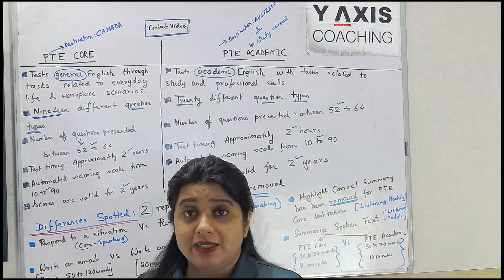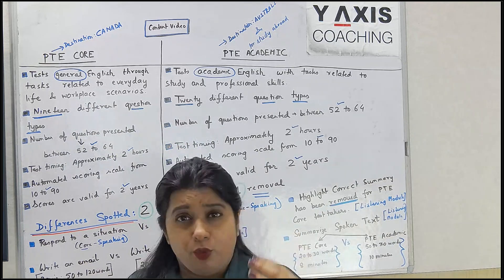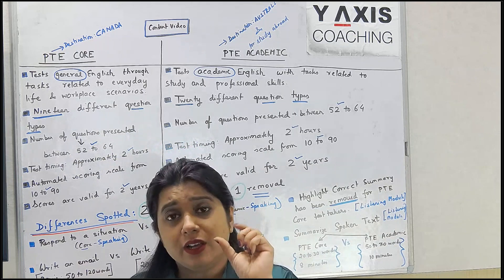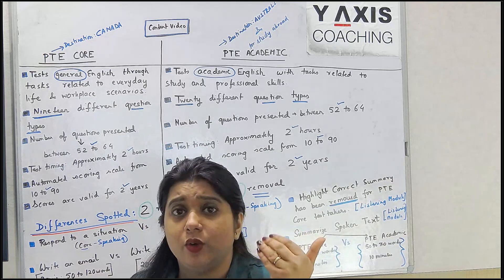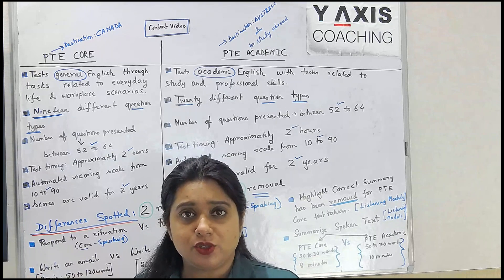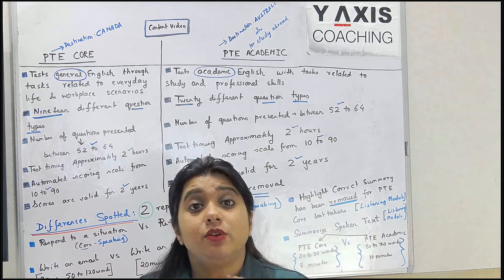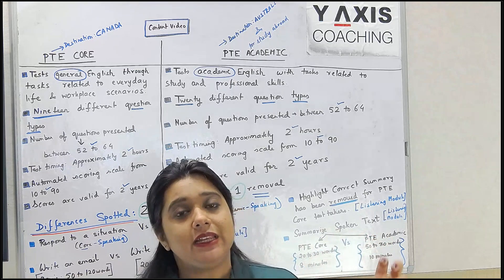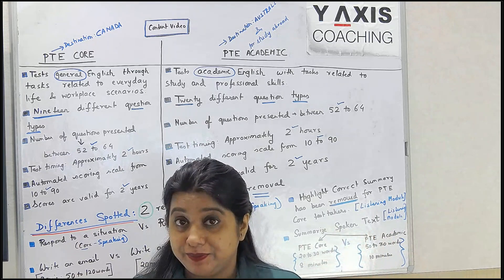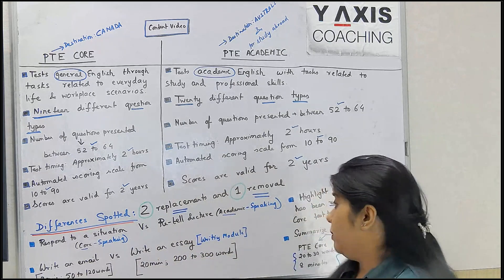When it comes to PT Academic, test takers have to listen to a lecture for one and a half minutes to two minutes. On the screen there will be four to six answer choices, and they have to click on the correct answer - which is the correct summary of the lecture they have listened to. That task required note-taking, and process of elimination had to be implemented to get down to one correct answer. That has been removed - PT Core does not have any task type known as 'highlight correct summary.' So the test has become a bit easier. Two replacements and one removal.